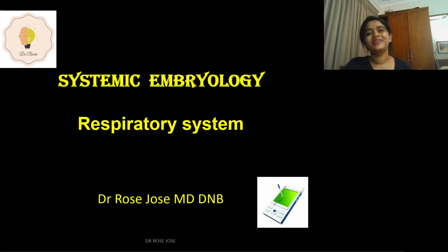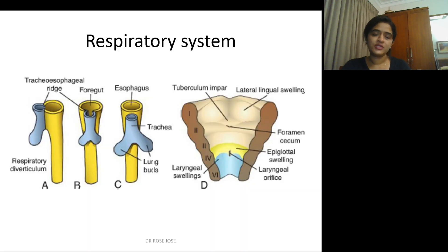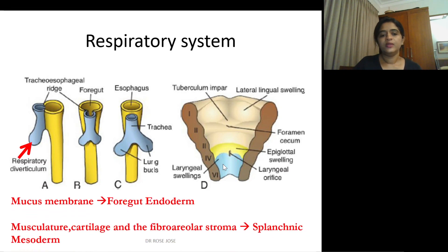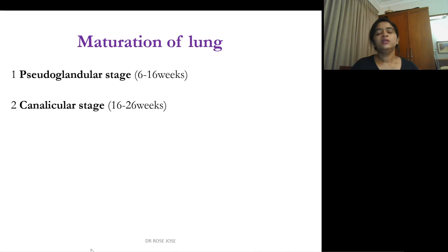Hello everyone, welcome back to my channel. This is a quick recap in embryology — the detailed version you can watch on my channel. Today we will be dealing with the respiratory system. The respiratory system is developed from the foregut as a diverticulum, forming the respiratory diverticulum. The tracheoesophageal ridge develops, and the mucous membrane is derived from the foregut endoderm, whereas the musculature, cartilage, and fibroelastic stroma are derived from the splanchnic mesoderm.